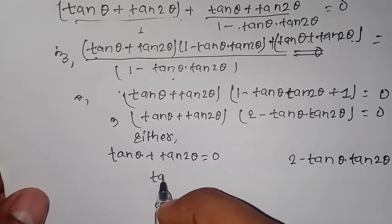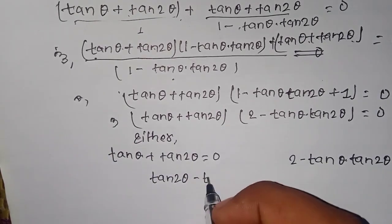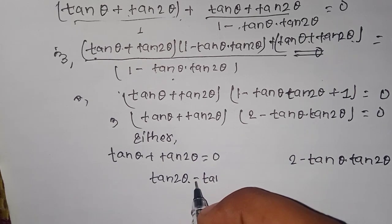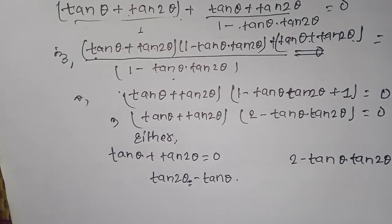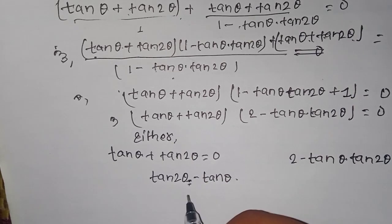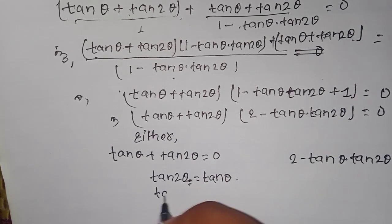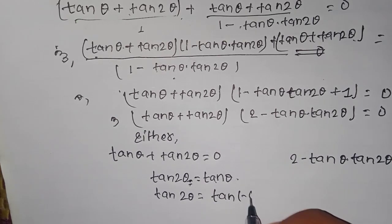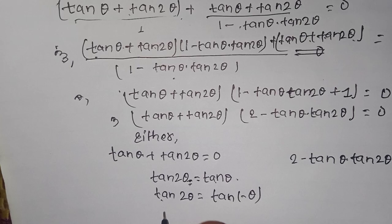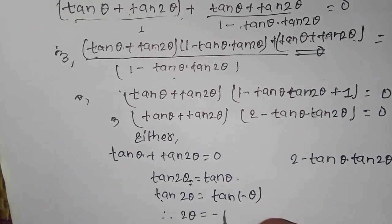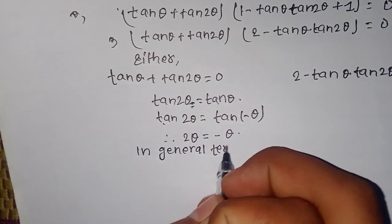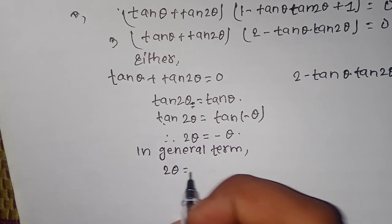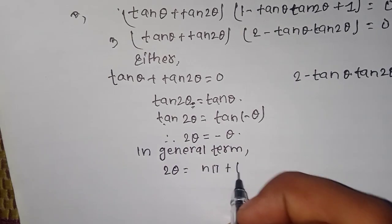This is tan(2-theta). Now we have tan(theta). Minus equals to minus tan(theta). Plus minus minus. Then we have tan, so minus tan(theta) gives us tan(minus theta). Therefore 2-theta equals to minus theta. In general term, tan(theta) equals n*pi plus theta.